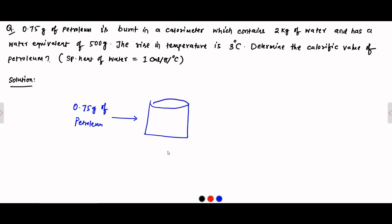The water equivalent is the mass of water which requires the same amount of heat as required by that substance — in this case, the calorimeter. Whatever the material of the calorimeter, it will require the same heat for the same rise in temperature as 500 grams of water. So instead of using the mass of the calorimeter and the specific heat of the calorimeter, we use water equivalent as a substitute. We can substitute an equivalent mass of water in place of that particular material, which will require the same amount of heat for the same rise in temperature.